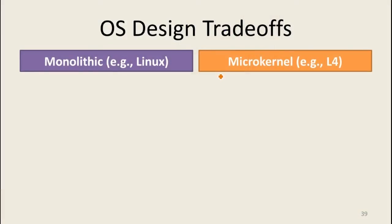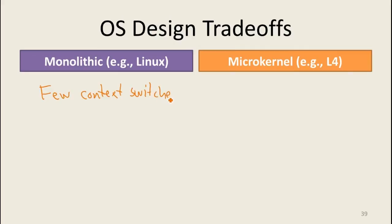Comparing the two main kernel designs — monolithic Linux versus L4 microkernel — what are the tradeoffs? One advantage of monolithic kernels is coherence since you control everything in that kernel, though that's somewhat a marketing argument since a microkernel vendor could design libraries coherently too. The most fundamental difference is context switches: with a monolithic kernel, everything is in the kernel so fewer context switches are needed; with a microkernel, many more are required — which is exactly why cheap IPC is so important.